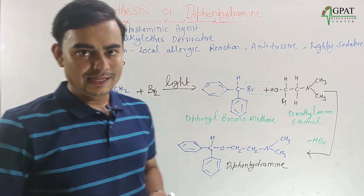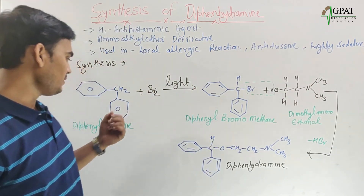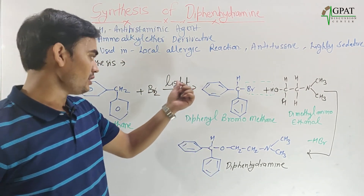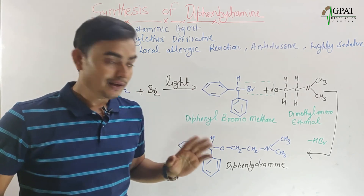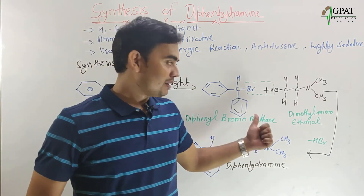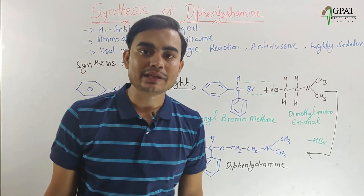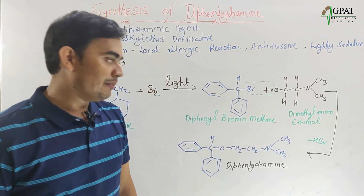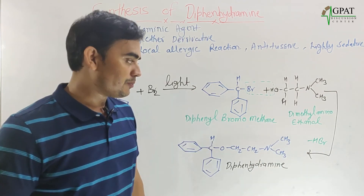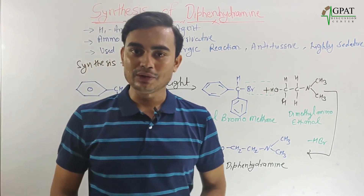So this is the synthesis of diphenhydramine — very easy, just a two-step reaction. First, diphenylmethane undergoes bromination in the presence of light to give diphenyl bromomethane. Then diphenyl bromomethane reacts with dimethylaminoethanol, and by removal of HBr we get diphenhydramine as the final product.